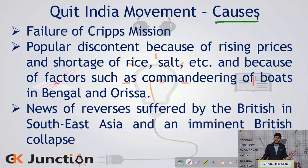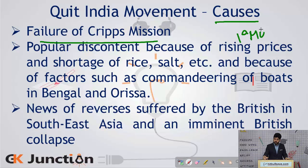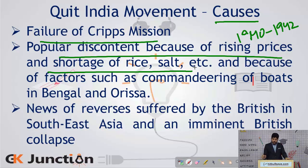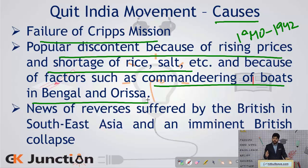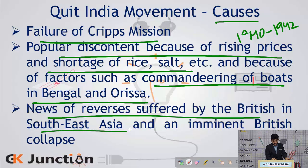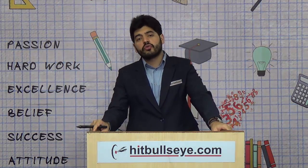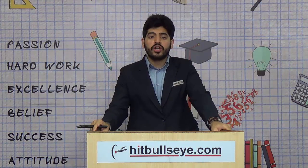Discussing the causes of the Quit India Movement: first was the failure of the Cripps Mission. Second, this being the period of around 1940 to 1942 — during World War II — there was popular discontent due to rising prices and shortage of rice, salt, and other commodities, as well as commandeering of boats in Bengal, Odisha, and other coastal areas. Third was news of reverses suffered by the British in Southeast Asia and the imminent British collapse, which was widely believed by Indians around 1942.